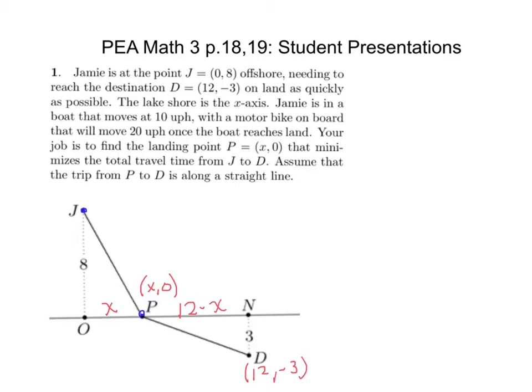Pythagorean theorem, right? This distance would be square root of x squared plus 8 squared. What would this distance be? Square root of (12-x) squared plus 3 squared. We know that distance equals rate times time. We want to find the shortest travel time, so time equals distance over rate. This is a distance, what's the rate along that distance? 10.